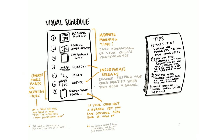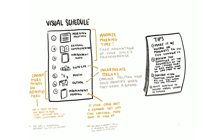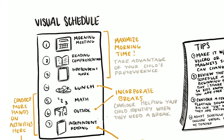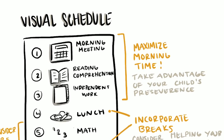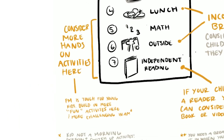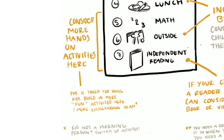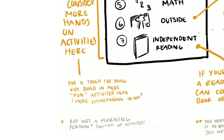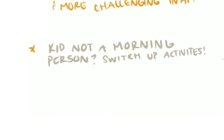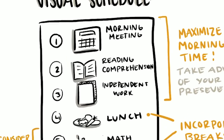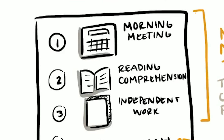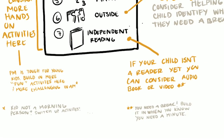If you know your student struggles with a certain subject, consider putting that at a time when they're more open to tough tasks. For example, I'm a morning person and like to do my big thinking in the morning, keeping tasks I enjoy for the end of the day since those require less motivation. Typically in schools, reading or math come first thing in the morning, and subjects like specials or social studies tend to come in the afternoon.